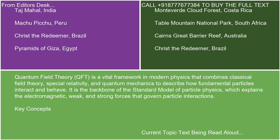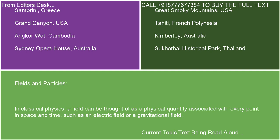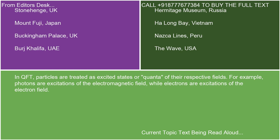Key Concepts: Fields and Particles. In classical physics, a field can be thought of as a physical quantity associated with every point in space and time, such as an electric field or a gravitational field. In QFT, particles are treated as excited states or quanta of their respective fields. For example, photons are excitations of the electromagnetic field, while electrons are excitations of the electron field.